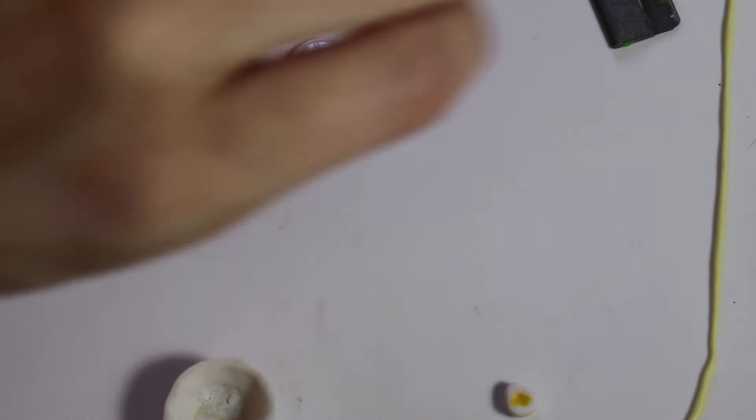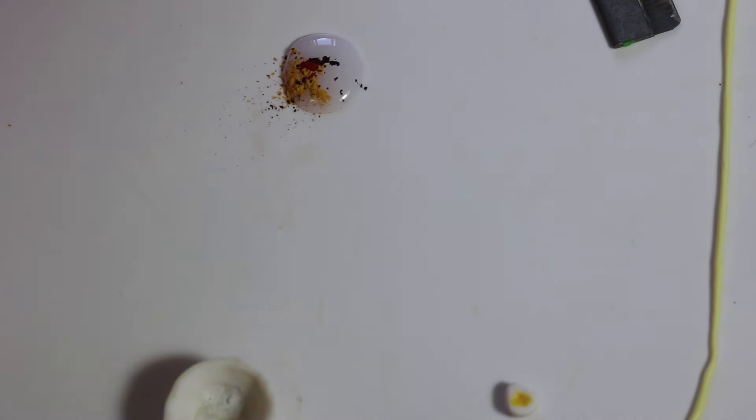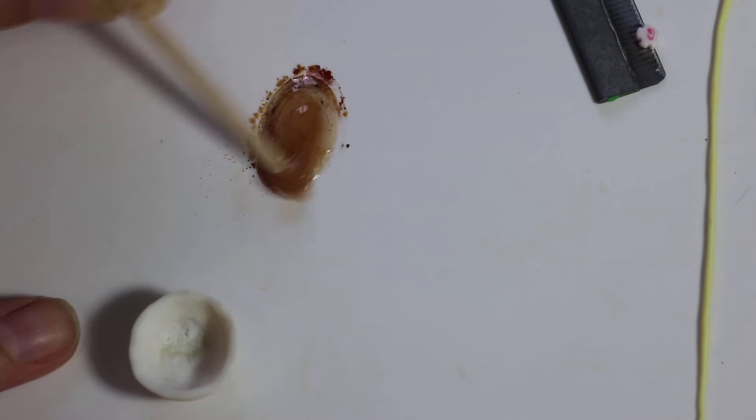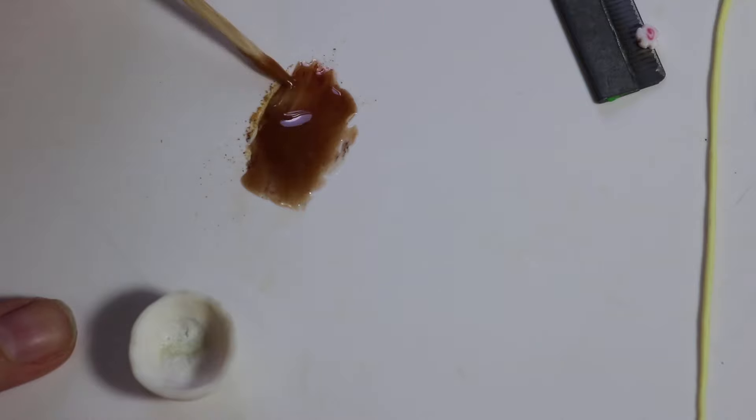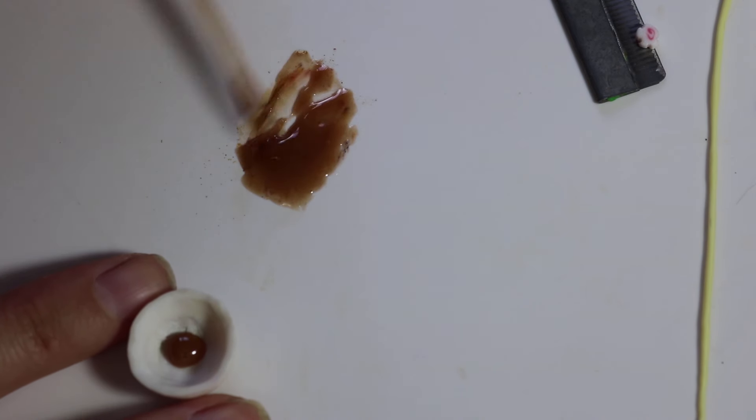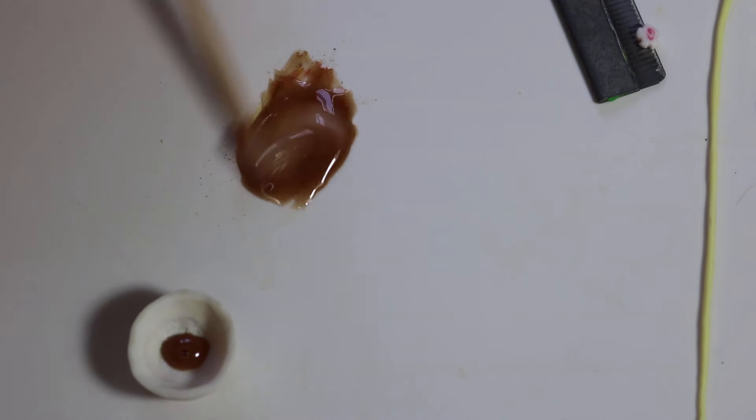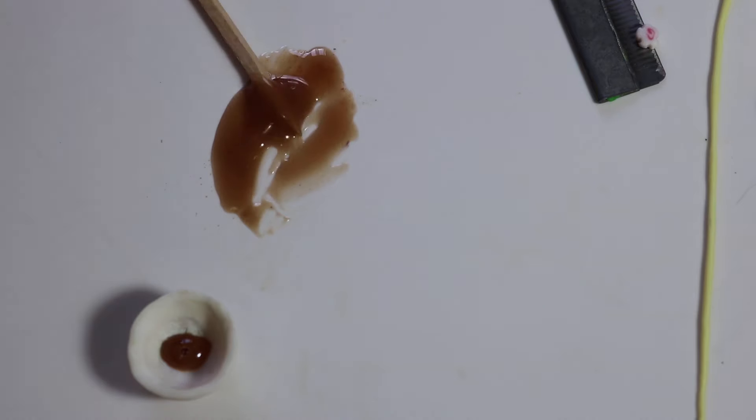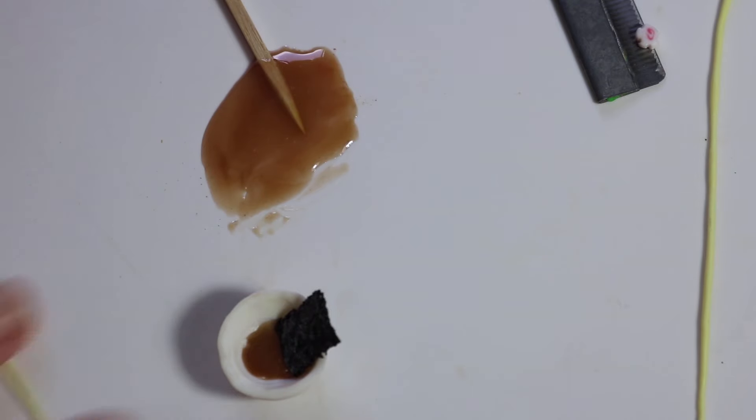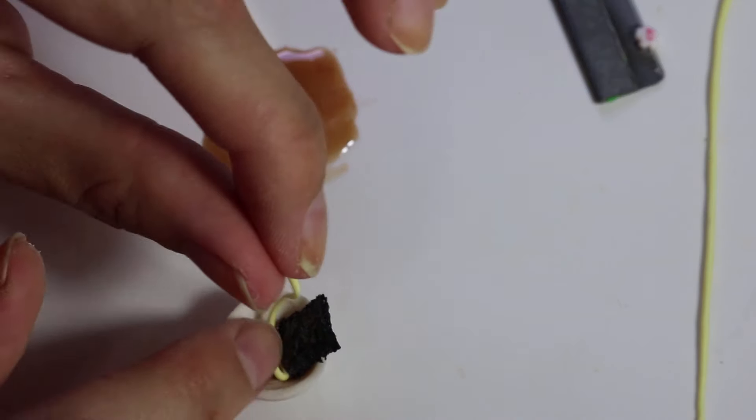And now it's time to fill up the bowl. So I'm using some liquid Fimo and then adding on some cream color soft pastel. Then a reddy brown and then a dark brown. So this would be the broth. And then I add on the nori on the side. And now it's time to add in the noodles.